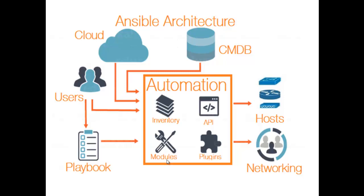Hosts: the hosts in Ansible architecture are node systems being automated by Ansible — they can be any kind of machine: Windows, Linux, Red Hat, etc. Playbooks are simple files written in YAML format which describe the tasks to be executed by Ansible. Playbooks can declare configurations, but they can also orchestrate steps of any manual ordered process, even if it contains jump statements. They can launch tasks synchronously or asynchronously.